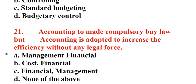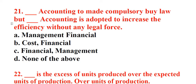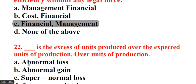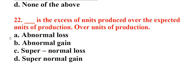Question 21: Underscore accounting is made compulsory by law but underscore accounting is adopted to increase the efficiency without any legal force. A. Management financial, B. Cost financial, C. Financial management, D. None of the above. Answer: C. Financial management. Question 22: Underscore is the excess of units produced over the expected units of production. A. Abnormal loss, B. Abnormal gain, C. Super normal loss, D. Super normal gain. Answer: B. Abnormal gain.